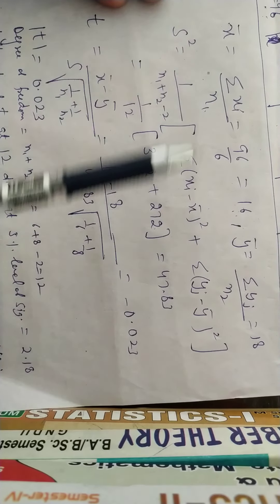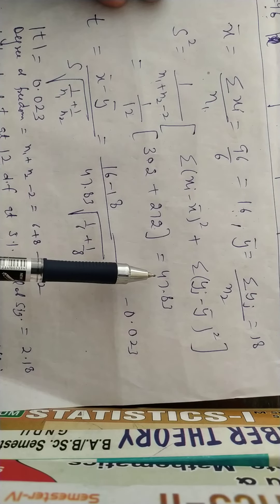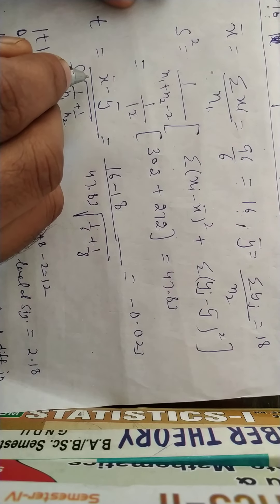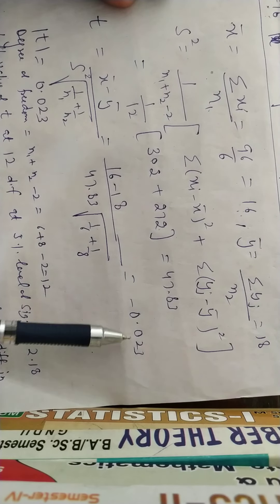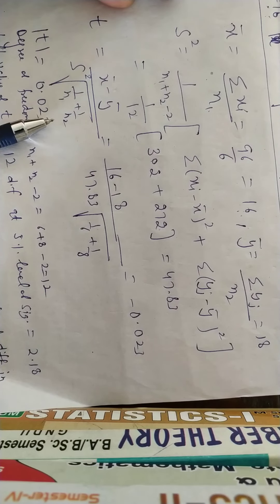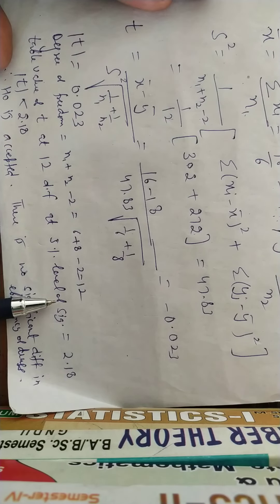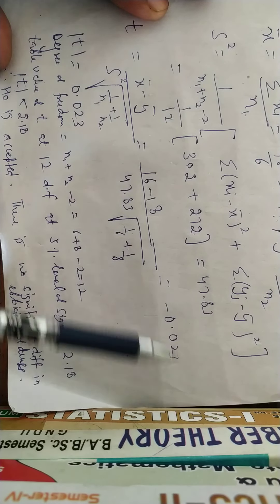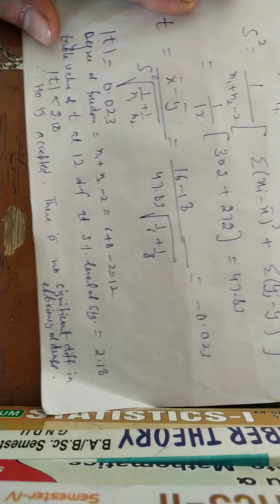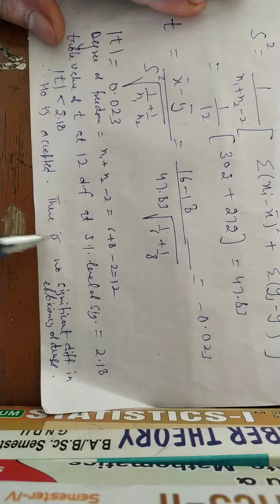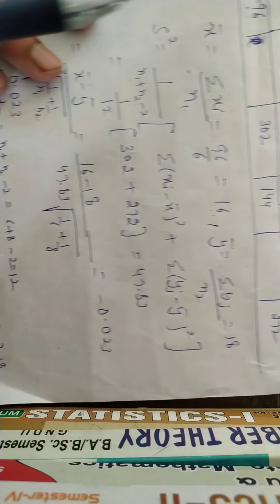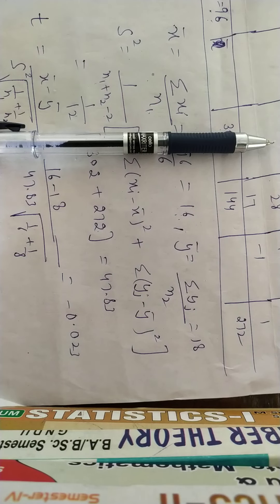After substituting all values and solving, the calculated T value is 0.023 (take the absolute/positive value, ignoring the negative sign). The degree of freedom is N1 + N2 − 2 = 6 + 8 − 2 = 12. At 12 degrees of freedom and 5% level of significance, the table value is 2.18. Since 0.023 < 2.18, the null hypothesis H0 is accepted — there is no significant difference in the efficiency of the drugs, meaning both drugs have an equal effect. This video covered what T-Test is, its conditions, applications, formula, and a medical/biological example. Thank you very much, students.